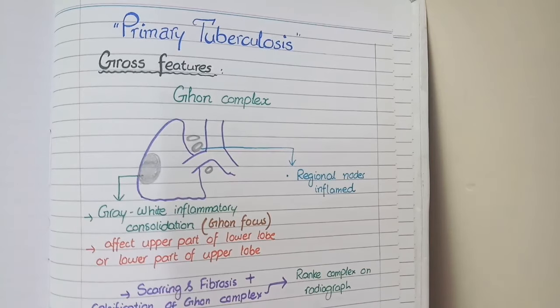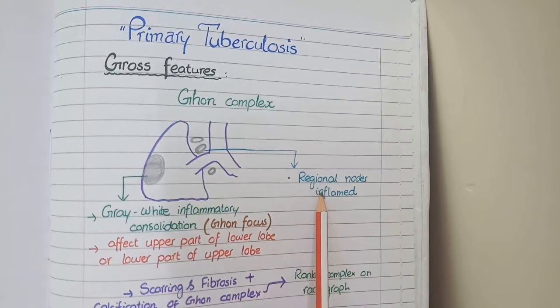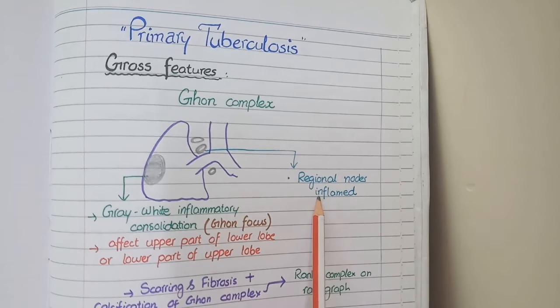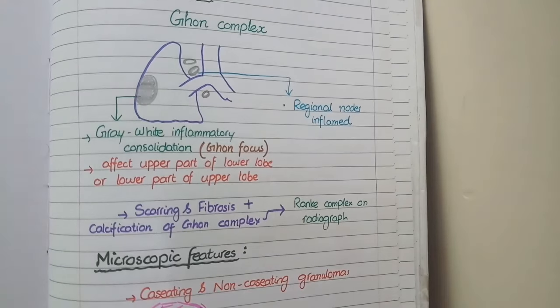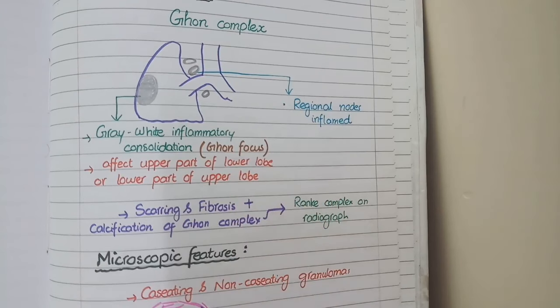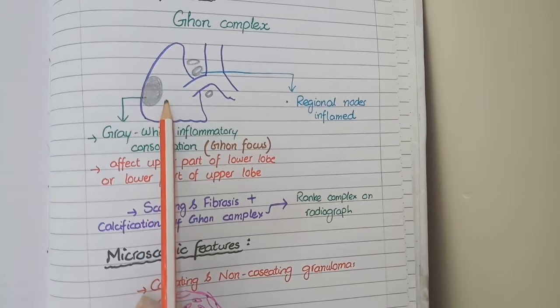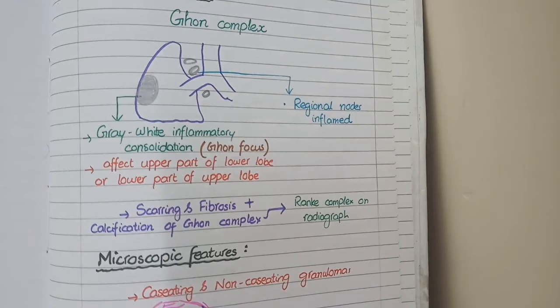Other than this Ghon focus, the second element of Ghon complex is enlarged tuberculous lymph nodes that are present at the hilum of lungs. So what is Ghon complex? Ghon complex is a mixture of Ghon focus and enlarged hilar lymph nodes. Ghon focus is a grey-white inflammatory consolidation that is present at the center of lung in cases of primary tuberculosis.